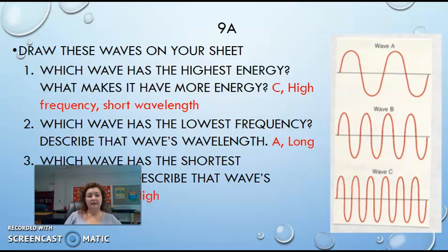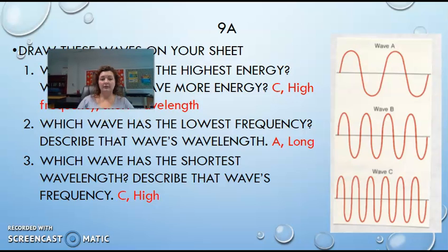Number two, which wave has the lowest frequency? Describe the wave's wavelength. It's wave A and it has the longest wavelength. And then number three, which wave has the shortest wavelength? And describe the frequency. It's going to be C and it has the highest frequency.